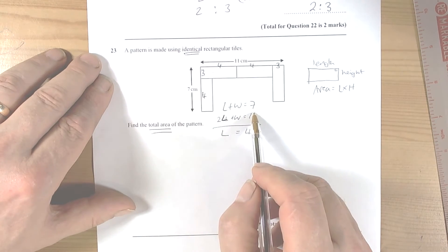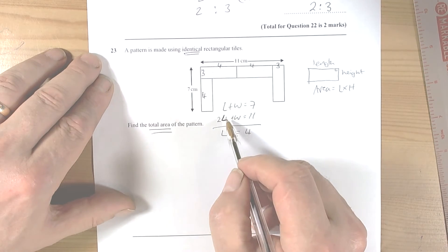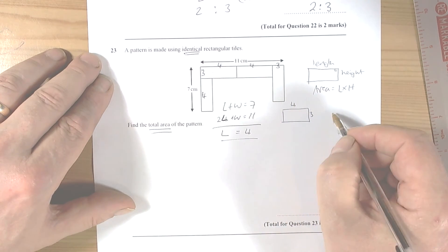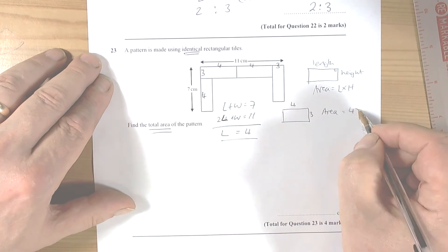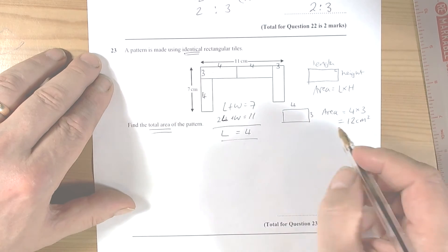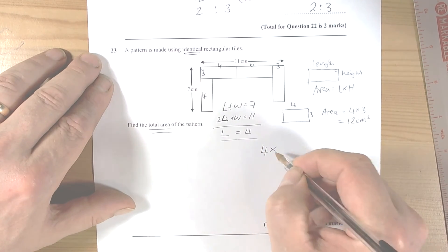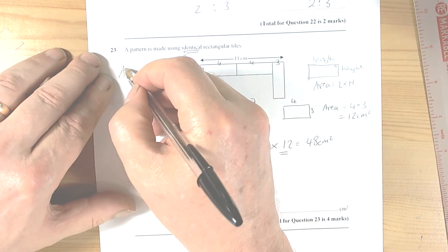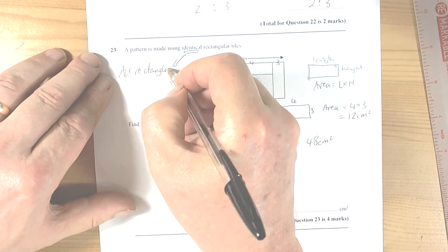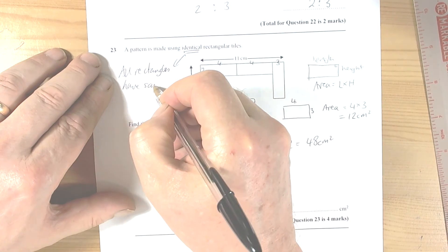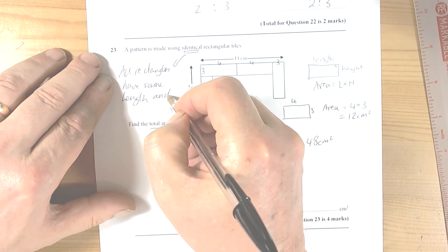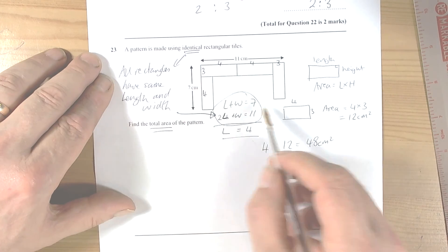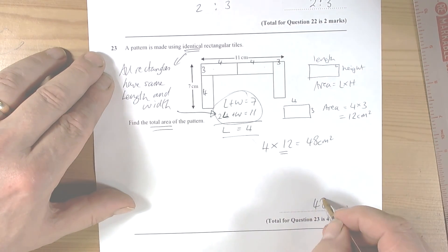And if we subtract those from each other, the widths cancel each other out, so we're left with just what one length is, and the length was 4. So we now know that one of the rectangles is 4 by 3, so the area of this is 4 times 3, which is 12 square centimeters. And we've got four rectangles and they're all identical, so 4 times 12 is equal to 48 square centimeters. So again, the key idea is all rectangles, that's how we could do that question and end up with the answer of 48 square centimeters.